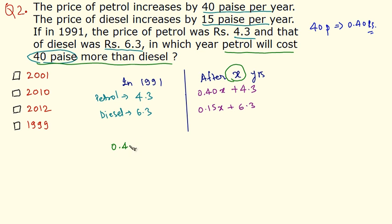We have 0.40x plus 4.3, which is the price of petrol. We are subtracting the price of diesel from that, so 0.15x plus 6.3 equals 0.40. This becomes 0.40x plus 4.3 minus 0.15x minus 6.3 equals 0.40.